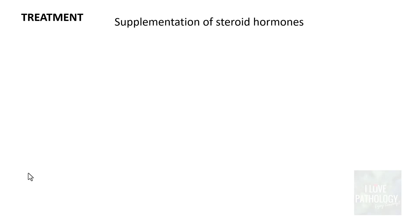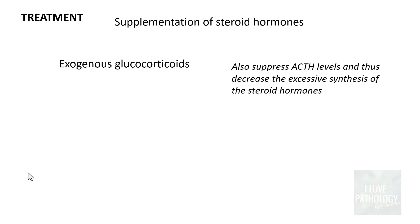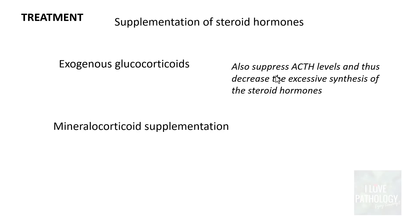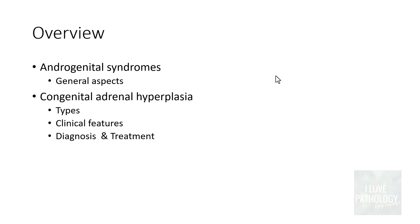Treatment involves supplementation of steroid hormones. Since aldosterone and cortisol are lacking, exogenous glucocorticoids are given, which also suppress ACTH levels. Once ACTH is suppressed, the excessive synthesis of testosterone is decreased. Mineralocorticoid supplementation is given in the salt wasting variant of congenital adrenal hyperplasia.